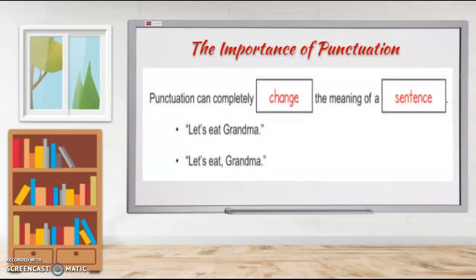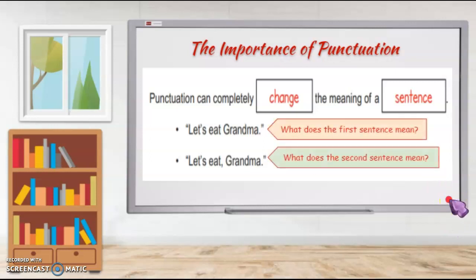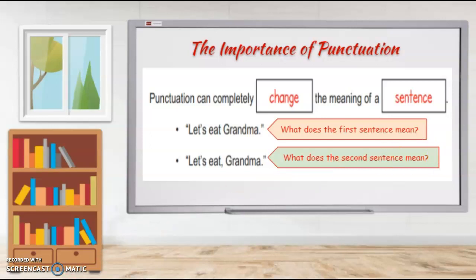Let's take a look at these sentences. Both sentences could be completely true and valid, but your reader may think something very different depending on how you punctuate the sentence. For example, in the fable Little Red Riding Hood, the first sentence is something the big bad wolf might say: 'Let's eat grandma.' But in the second example, 'Let's eat, grandma,' by placing the comma, we have a totally different meaning — something that Little Red Riding Hood might say, and one that grandma would certainly prefer.